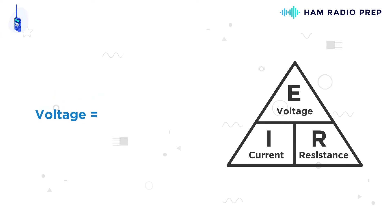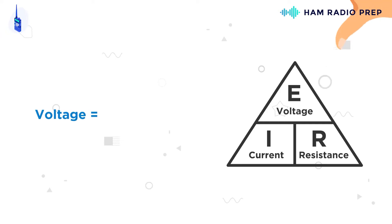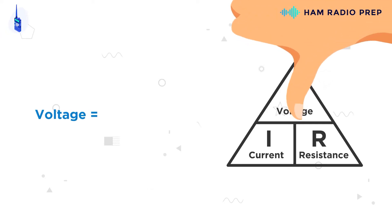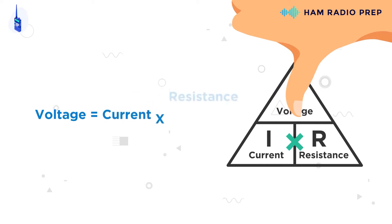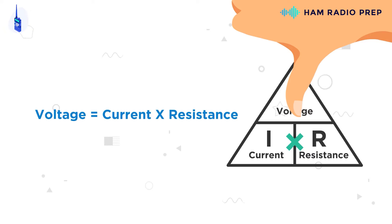As an example, let's say we want to calculate the voltage E. First, circle the voltage E. Notice that the current I is side by side with resistance R, so add a multiplication sign. Now you have your answer: voltage E equals current I multiplied by resistance R.